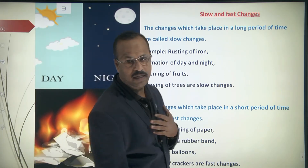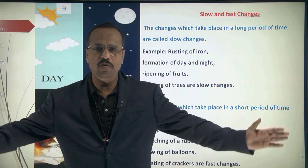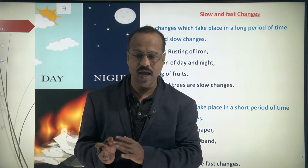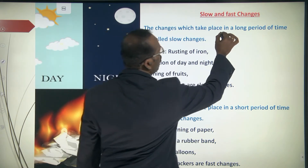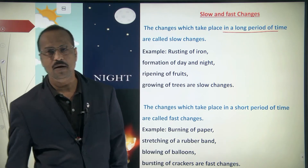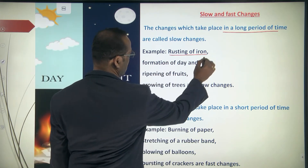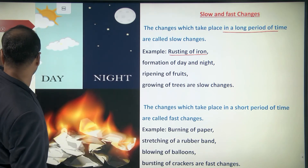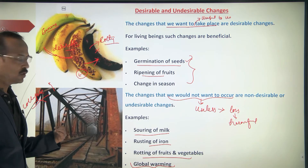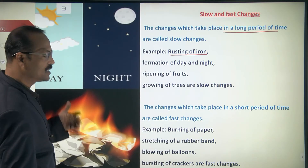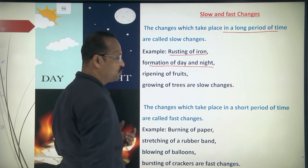Now let's look at slow and fast changes. Slow changes take a long period of time to occur. Rusting of iron is an example — a bridge constructed today will not rust by tomorrow; it takes a long time. Formation of day and night takes 12 hours — every 24 hours one night and one day cycle completes, which is also considered a slow change.